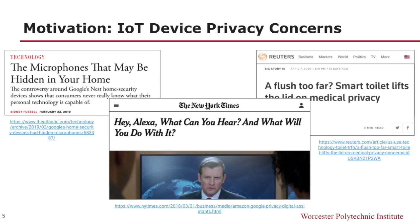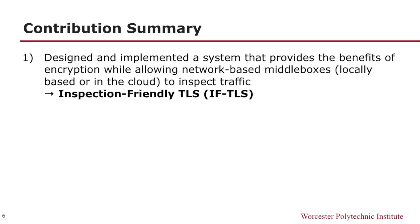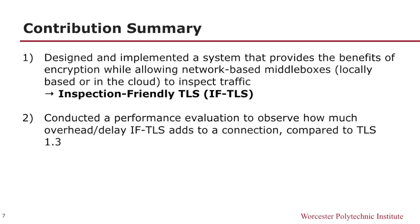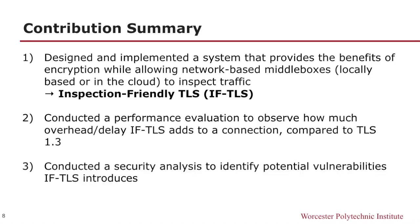So a new approach is needed to better balance security and privacy, in which the user has more control over their own data. And this is where our work comes in. First, we designed and implemented a proof-of-concept system that provides the benefits of encryption while allowing network-based middleboxes to inspect traffic. We call this inspection-friendly TLS, or IFTLS. Second, we conducted a performance evaluation to observe the overhead IFTLS adds compared to TLS 1.3, the industry standard. Finally, we conducted a security analysis to identify potential vulnerabilities IFTLS introduces.